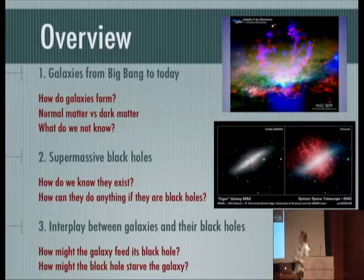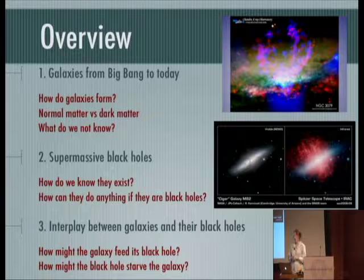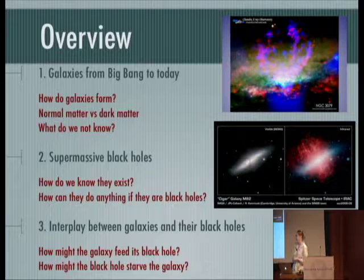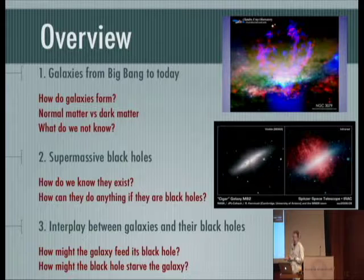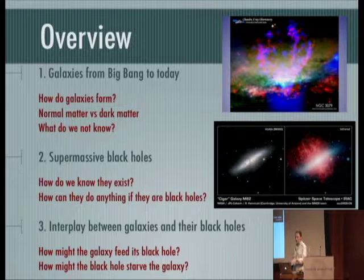We will start with an overview of how galaxies form from shortly after the Big Bang to modern day. I will discuss differences between normal matter and dark matter, then a list of outstanding issues that we do not understand. Then I will shift gears and talk about supermassive black holes — how do we know that they exist? Also, once things fall into the black hole, nothing can get out, so what can they do? And then I will talk about the surprising role that supermassive black holes play in the evolution of their host galaxies — how the galaxy feeds the black hole and how the black hole starves its host galaxy.